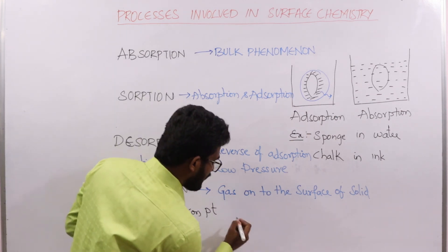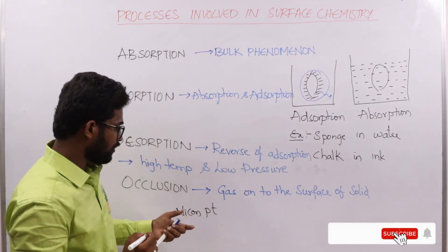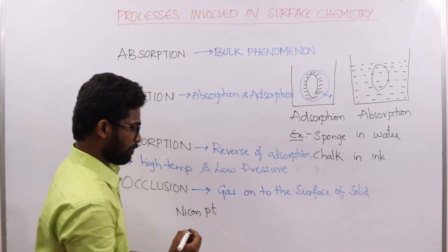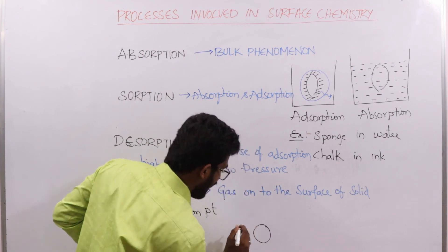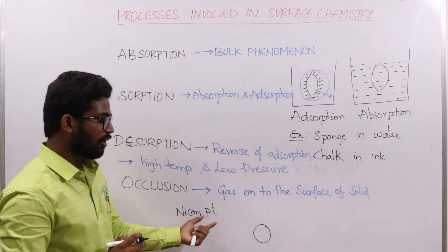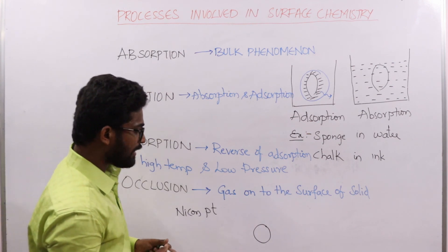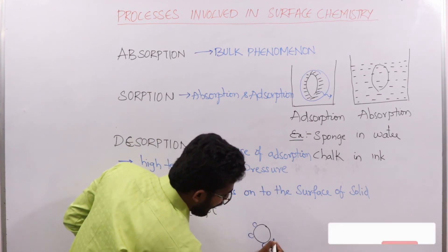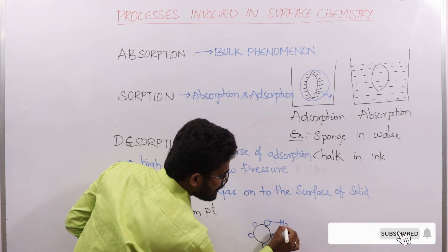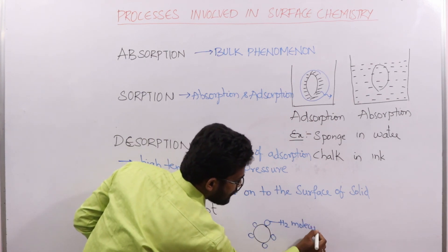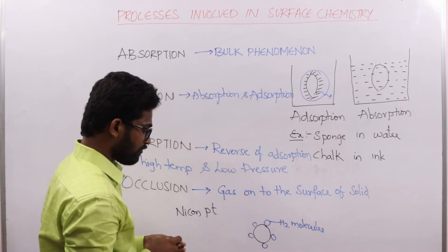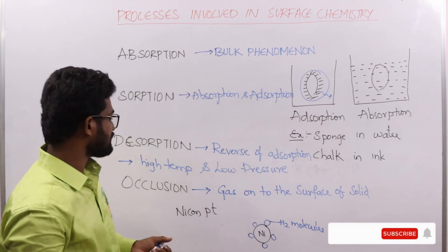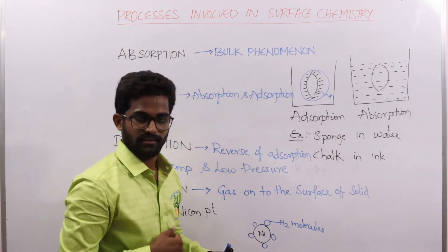In the hydrogenation example, hydrogen gas molecules are adsorbed onto the surface of the solid metal catalyst — nickel or platinum. Consider a solid metal particle; the blue colored balls represent hydrogen gas molecules that are adsorbed onto the surface of the solid metal. This process is called occlusion. Thank you.